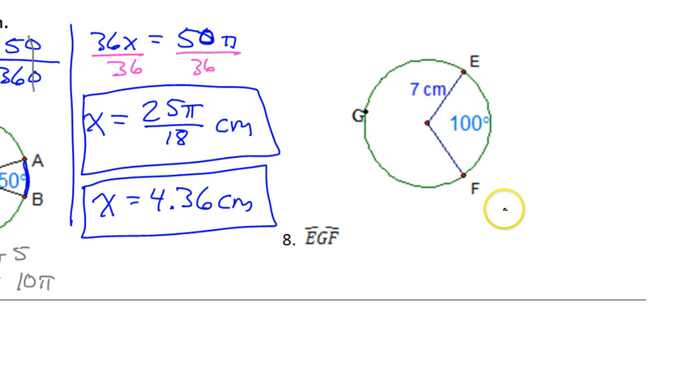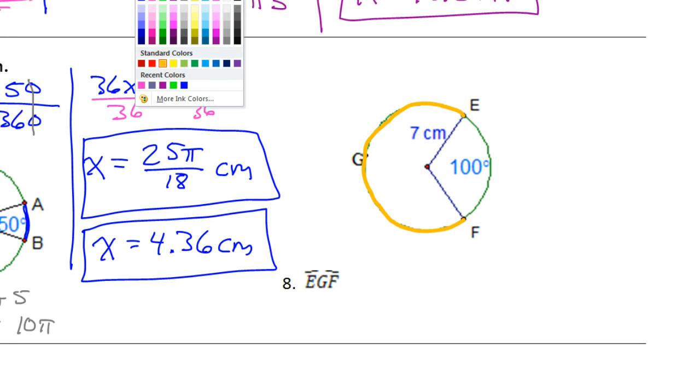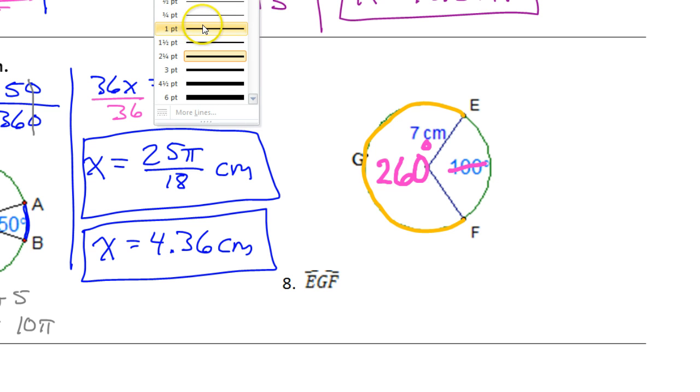Looking over here at number 8. We're still finding arc length. But be careful. Look at these letters. E, G, F. Let me highlight this in a different color to make it really clear. E, G, F is the long way around. E through G and back around F. E, G, F is the major arc. So, this 100 degrees is not the angle that we really need. We need the one that matches the arc that they asked us for. So, of course, we are going to subtract from 360. So, if I take 360 minus 100, of course, that's 260. So, 260 degrees. That's what we'll use. Not the 100. Now, aside from that, we're back to part over whole equals part over whole.